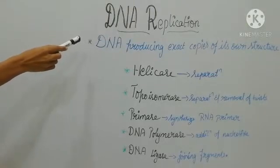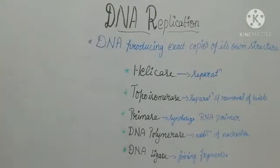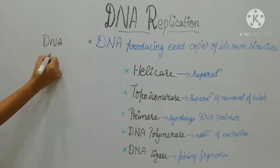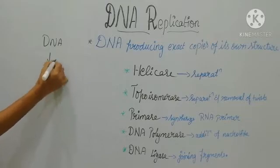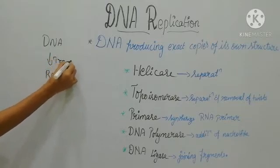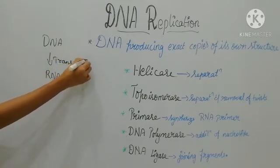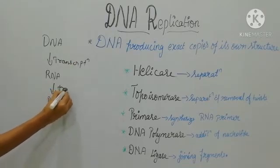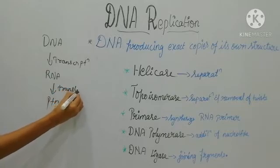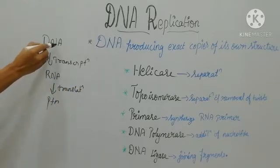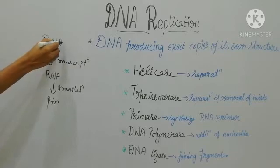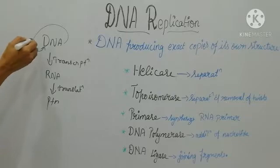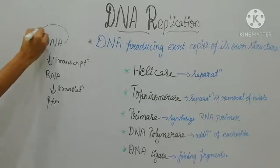Here we are going to see about DNA replication. From DNA, RNA is formed and that process is called transcription. DNA to RNA is transcription, and RNA to protein is called translation. DNA can also form exact copies of its own structure — that is, DNA will produce DNA — and that process is called replication.